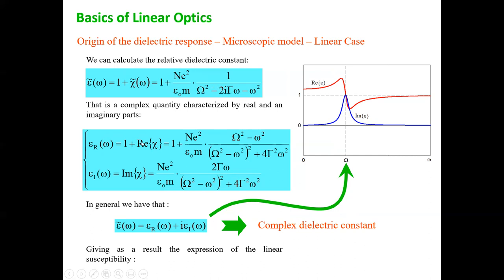Now remember: if I calculate one plus the susceptibility I get the dielectric constant. So the dielectric constant is also a complex number — it is simply the susceptibility with the real part shifted by one. You can rationalize this expression and calculate the real and imaginary parts of the dielectric constant: the real part is 1 + Re(χ) and the imaginary part is Im(χ). The imaginary part of ε is peaked around Ω; the real part has an S-like shape.